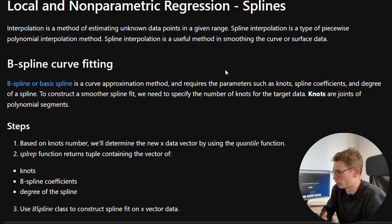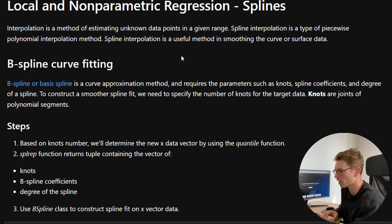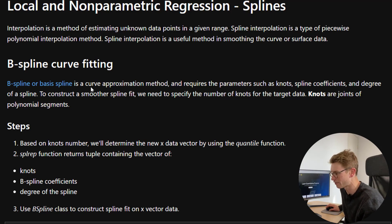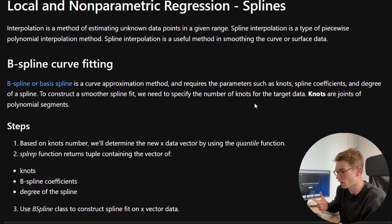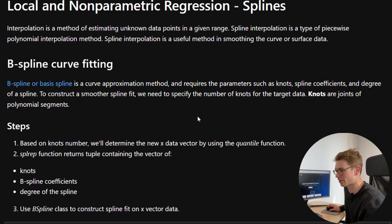Now let's take a look at another methodology: local and non-parametric regression using splines. Interpolation is a method of estimating unknown data points in a given range. Spline interpolation is a type of piecewise polynomial interpolation method useful in smoothing curve or surface data. A B-spline curve fitting — or basis spline — is a curve approximation method that requires parameters such as knots, spline coefficients, and degree of the spline. To construct a smoother spline fit we need to specify the number of knots, which are the joints on the polynomial segments, and we get to define how many there are.